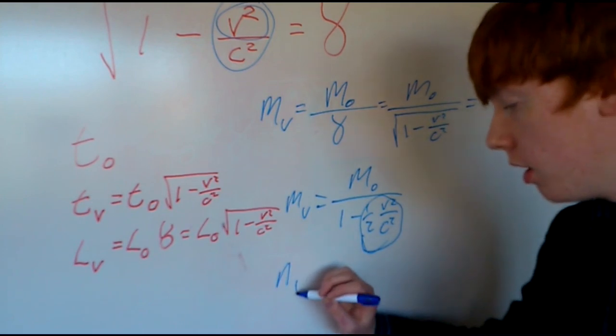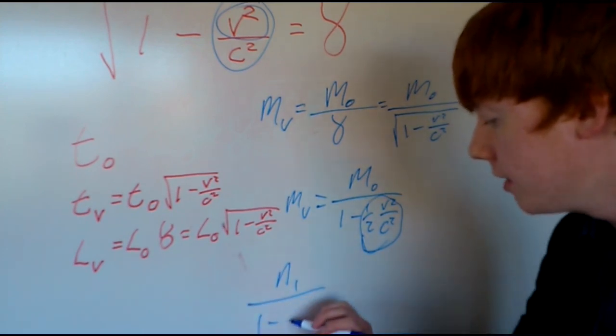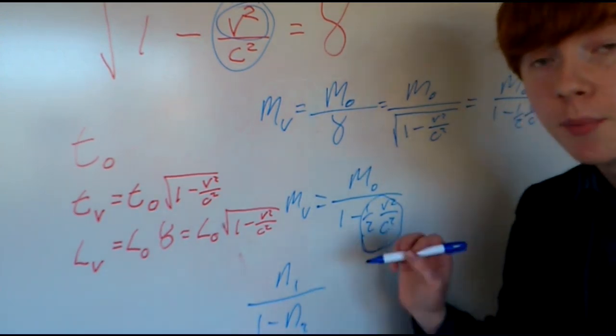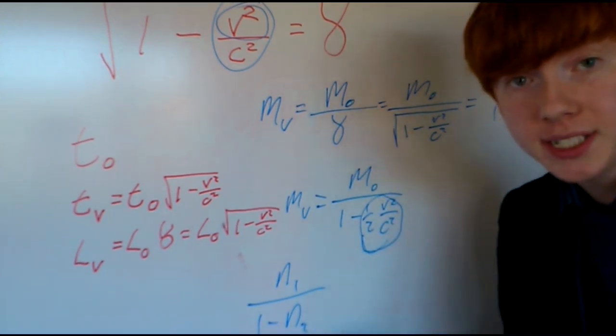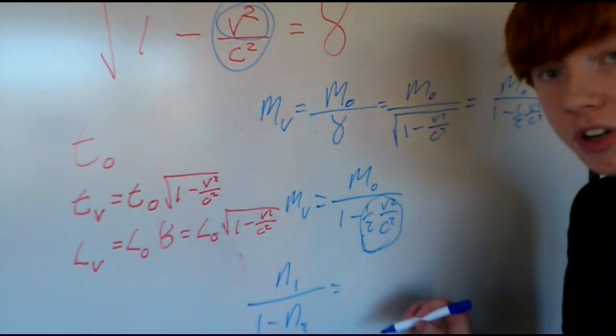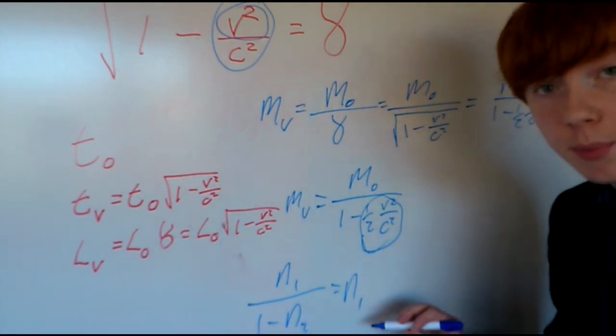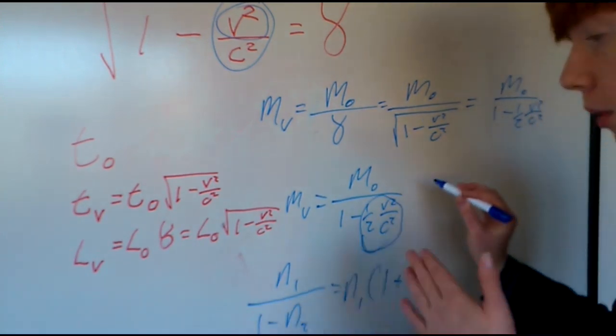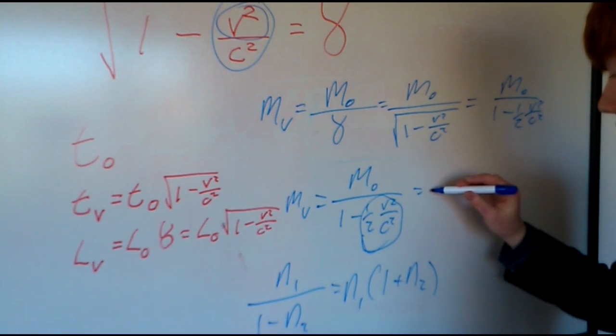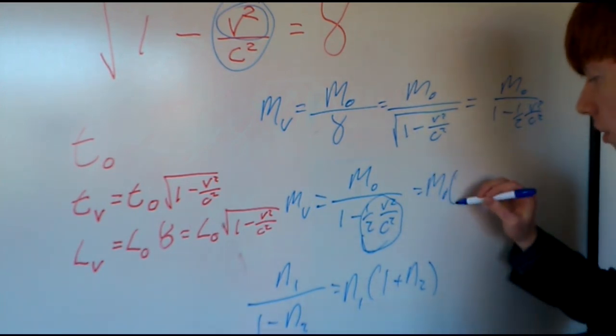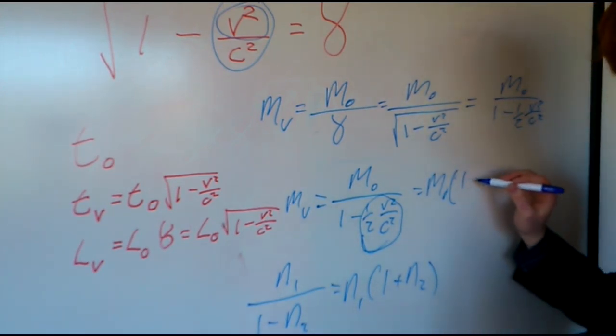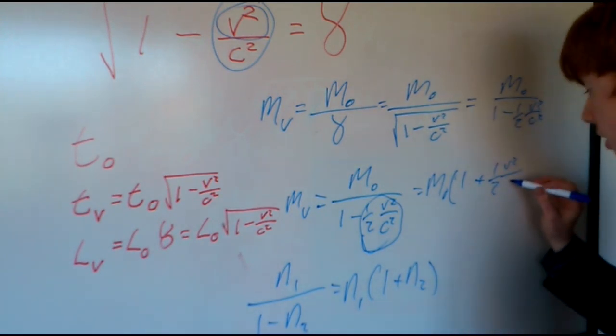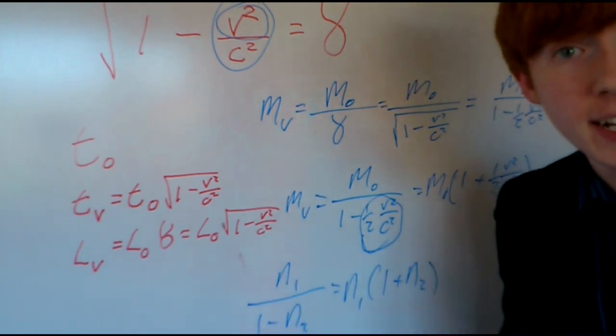Because when one number divided by one minus another number, while that other number is very small, much less than one, but still more than zero, that means that we can simplify it so that it's the first number multiplied by one plus the second number. Which, when we do it to this, we get to the mass while we're still multiplied by one plus half of the velocity squared divided by the speed of light squared. Now, just let me clean up this board.